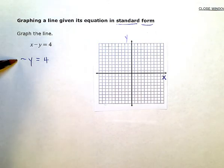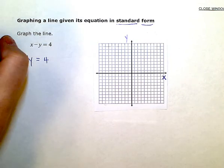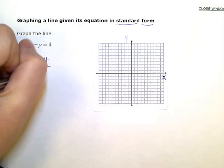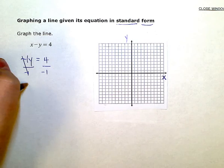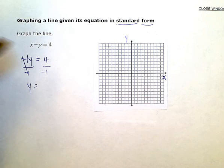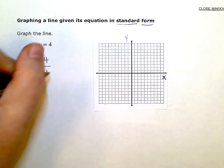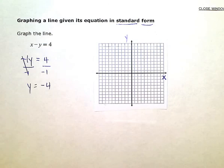So to get rid of that negative, remember that's really negative 1Y. There's kind of an implied or imaginary one there. I'm going to divide both sides by negative 1. Negatives cancel, so positive Y will equal 4 divided by negative 1 or negative 4. So my Y intercept is at negative 4.